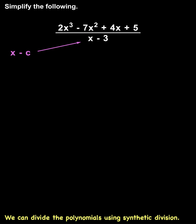We start by finding the value of c. Since negative c equals negative 3, we know that c equals 3. Next, we put the value of c inside a box, so we put the 3 inside a box.